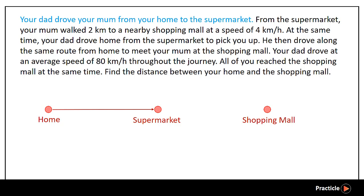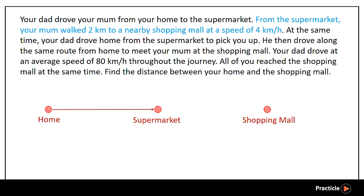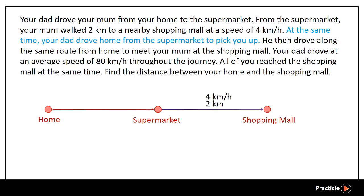From the supermarket, your mom walked 2km to a nearby shopping mall at a speed of 4km per hour. So this is your mom's journey, and we label what we know over here — the 2km, followed by her speed of 4km per hour. Next, at the same time, your dad drove home from the supermarket to pick you up. This arrow in red signifies your dad's journey.